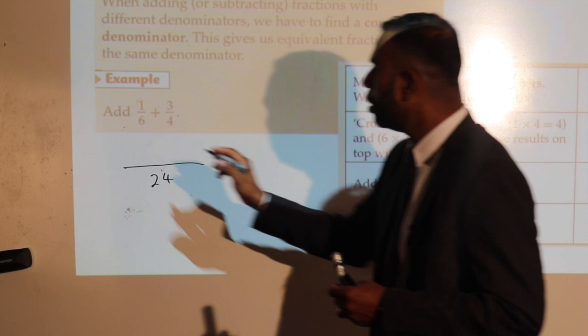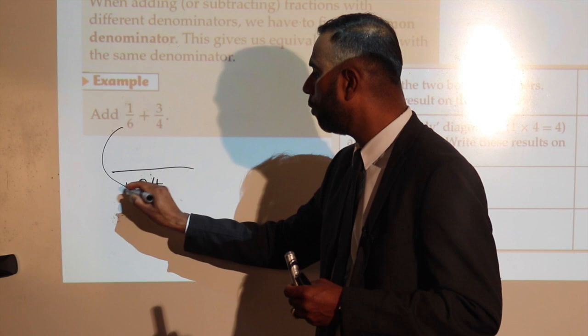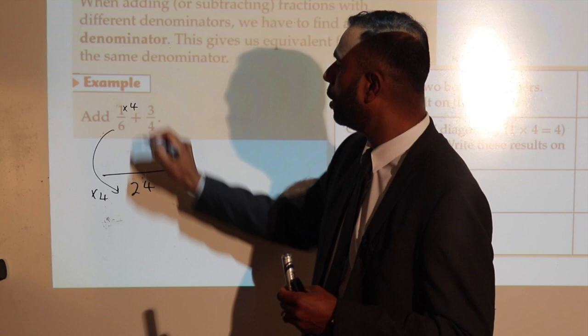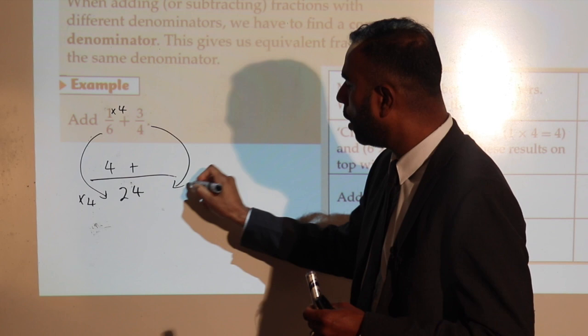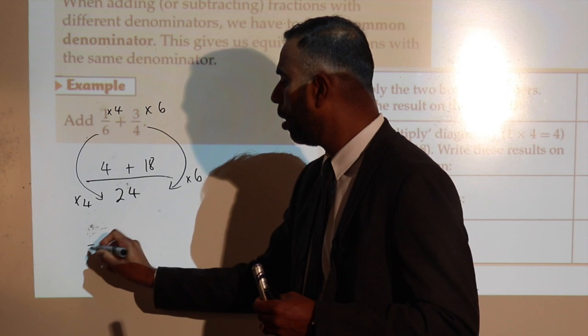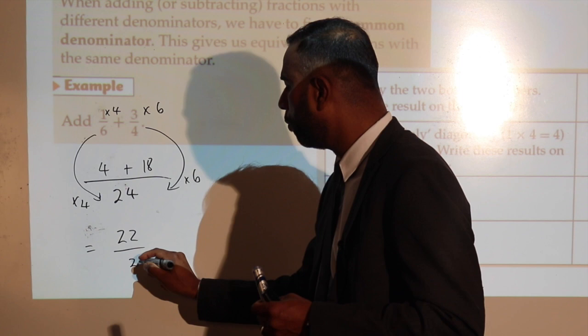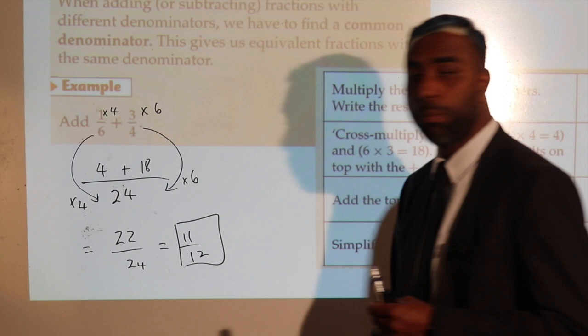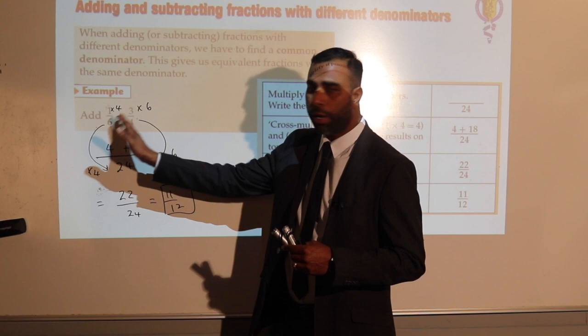From 6, I have to multiply by 4 to get to 24. So the same thing I do with the numerator — that makes it 4. And from 4, I have to multiply by 6, so the same thing here — that makes it 18. Now 18 and 4 is 22 over 24. This is the same as 11 over 12 in simplified form. So that's the basic background as to how to add two fractions with different denominators.